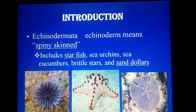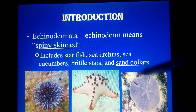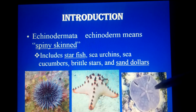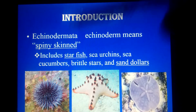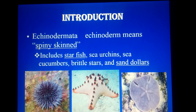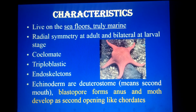Echinoderms include starfish, sea cucumber, sea urchin, brittle star, and sand dollar. You can see the sand dollar — these animals all live on the floor of the sea, and the shape of that animal is like a dollar. They have spine skin.